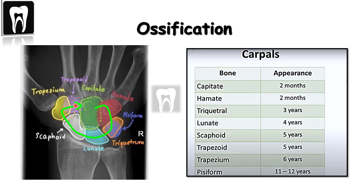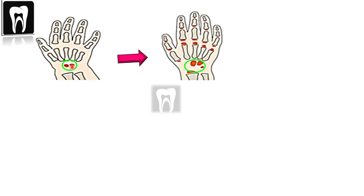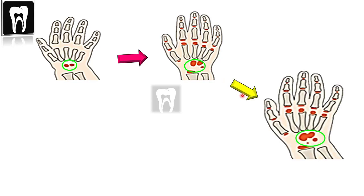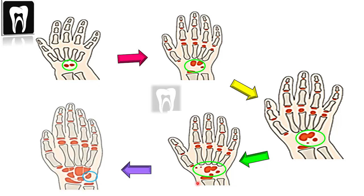To remember the age numbers using carpal bones: if you see two carpal bones — the capitate and hamate — the patient is about two months old. If you see three carpal bones — capitate, hamate, and triquetrum — the patient is approximately three years old. Four carpal bones means approximately four years old. If you see the STT (scaphoid, trapezoid, and trapezium), or more than four carpal bones except the pisiform, the patient is approximately five to six years old. If you see the pisiform, the patient is about 11 to 12 years old.